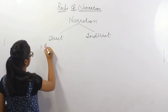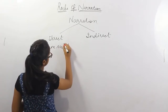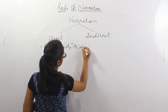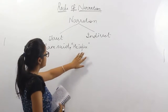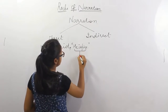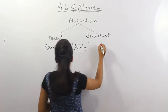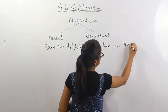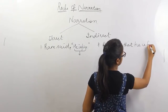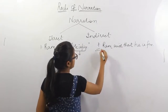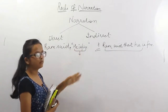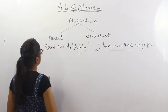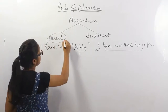For example, Ram said, in inverted commas, 'he is fine.' So we have represented whatever Ram has said in the actual form. If I write it as 'Ram said that he is fine,' in this case I have not used inverted commas — I am representing whatever Ram has said in an indirect form. Today we are going to do the basic rules of narration, or changing a sentence from direct to indirect.